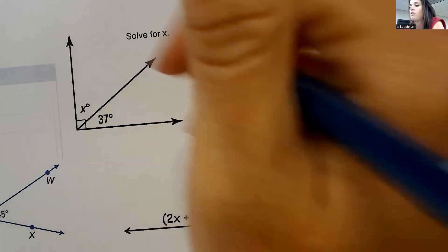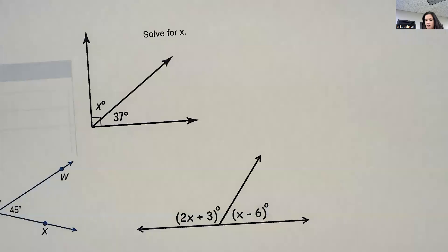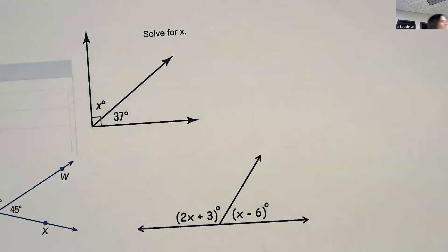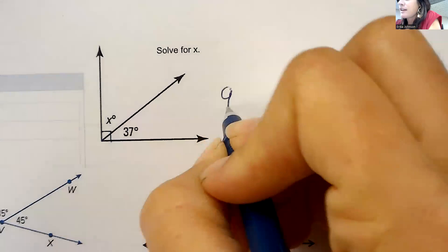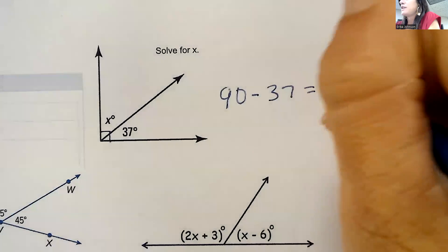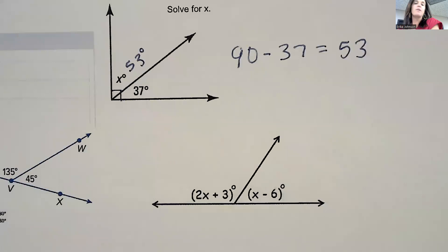So here we have some complementary angles and some supplementary angles we're supposed to solve for X. If this is 90 right here, those are complementary. To find X, we do 90 minus 37. That would give me 53 for X.